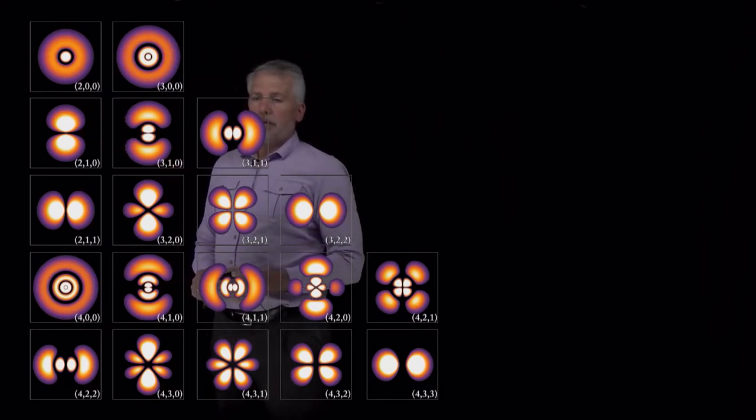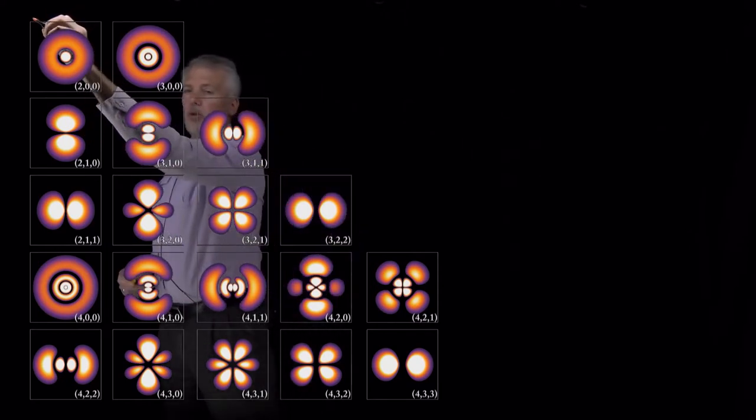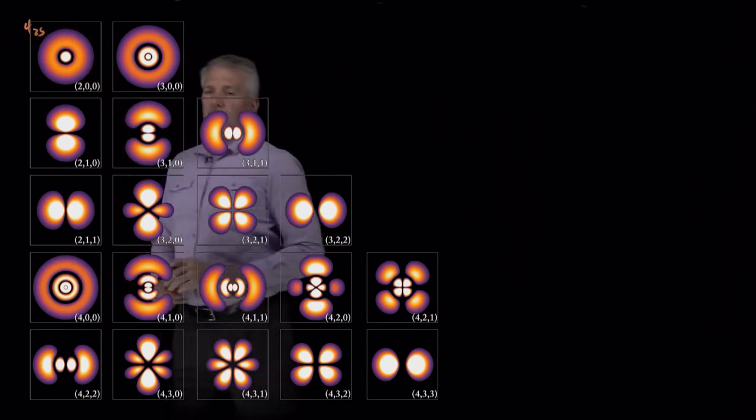2, 0, 0 is the 2, 0, 0 wave function, of course, but we've learned that the more common name for that wave function is the 2s orbital.